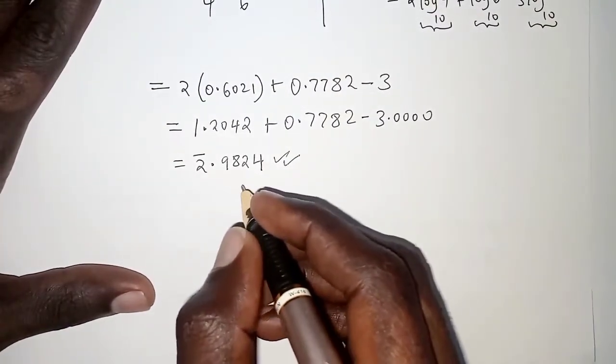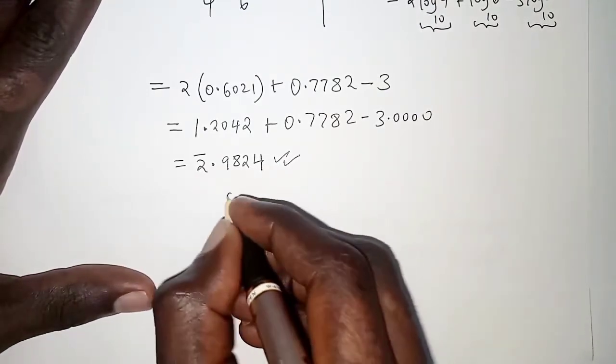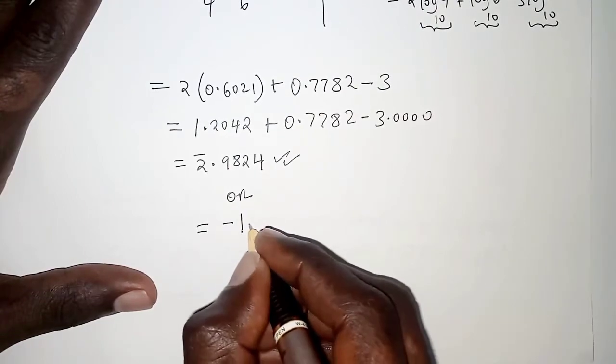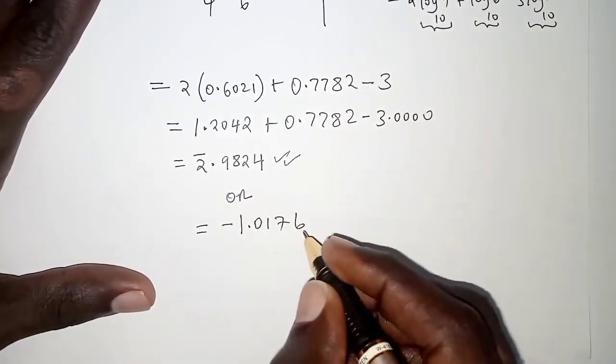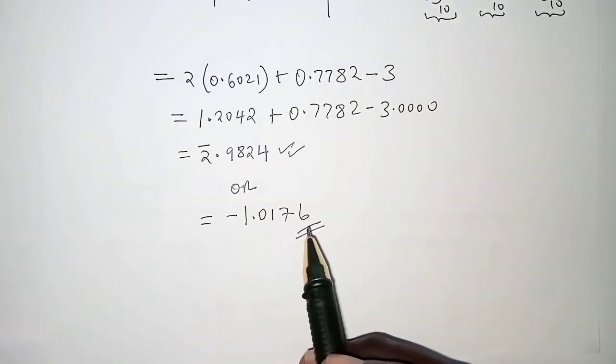You would not be wrong if you just add them straight away and get your answer as -1.0176. You will not be penalized for having your answer in this form, as it would still be correct.